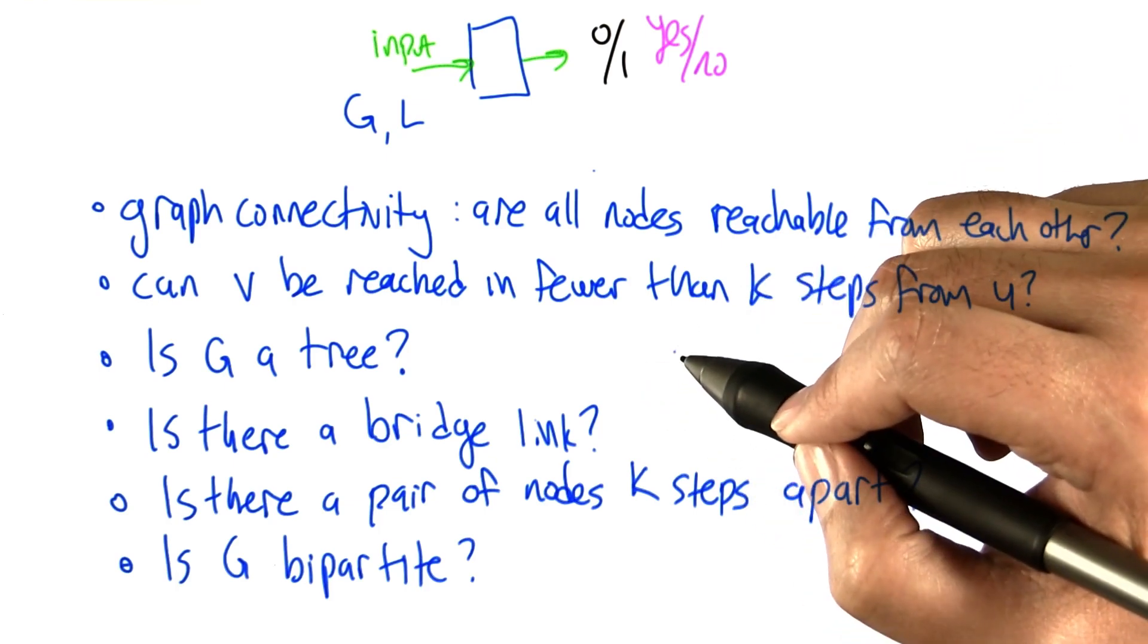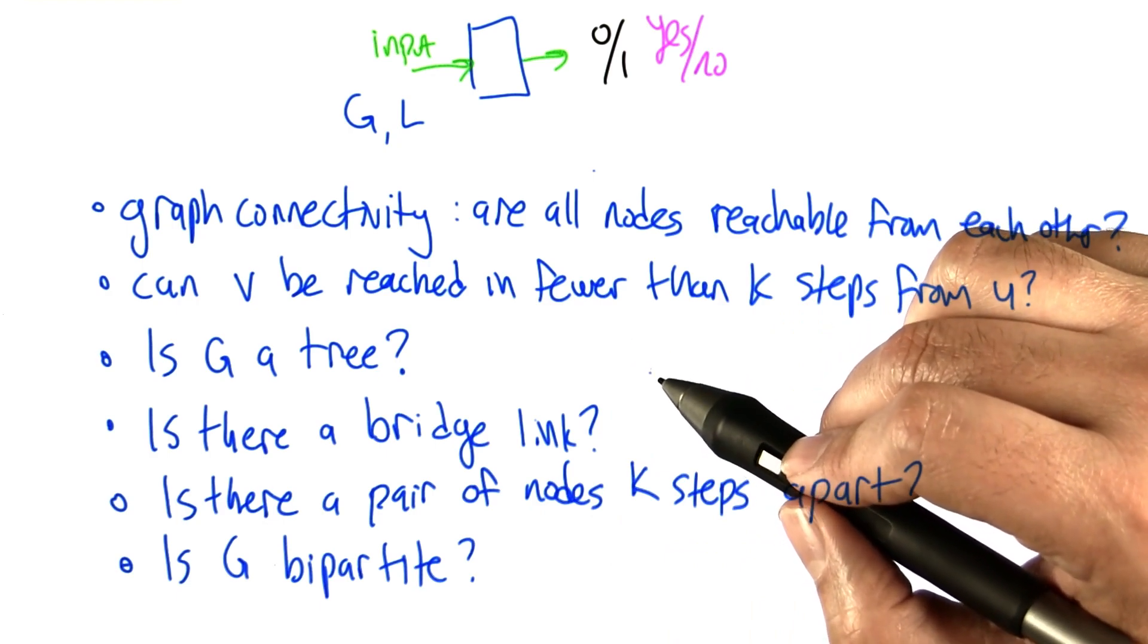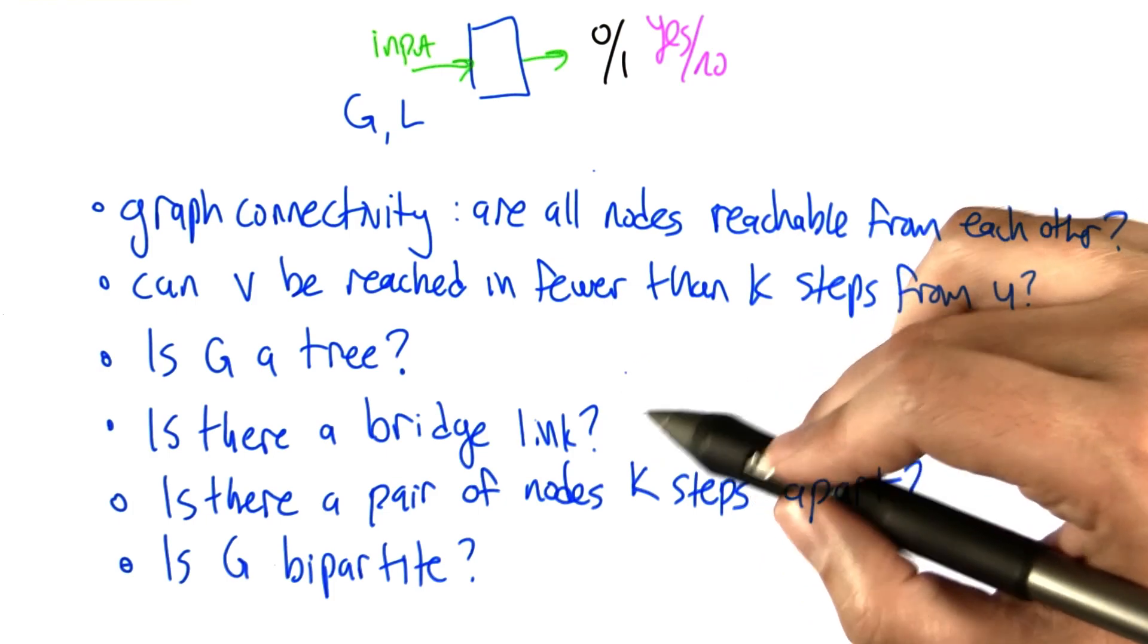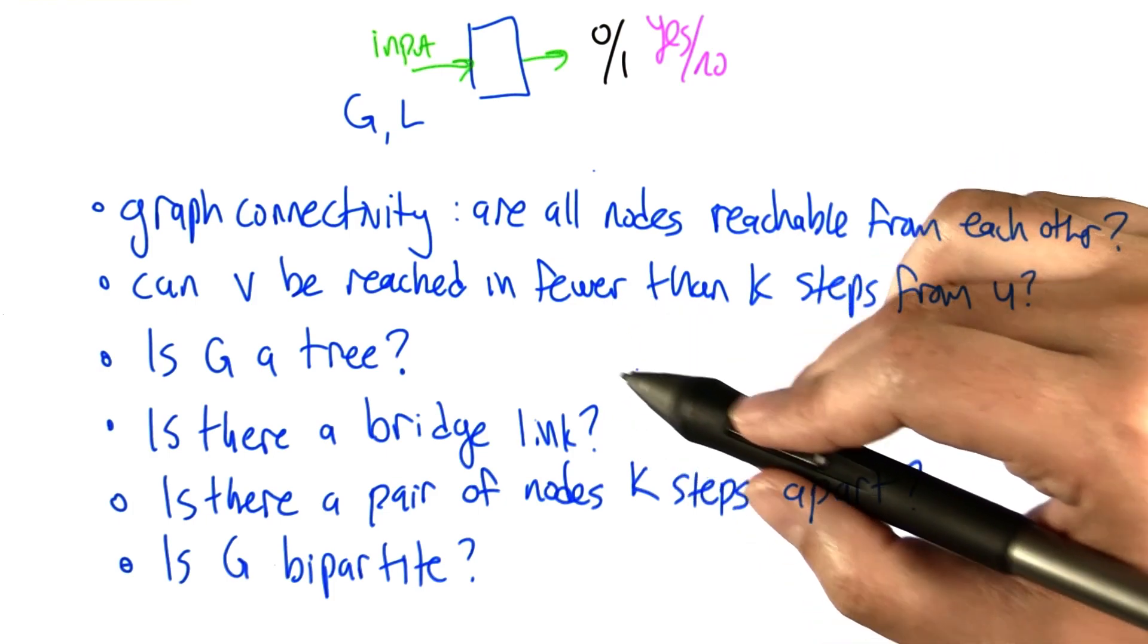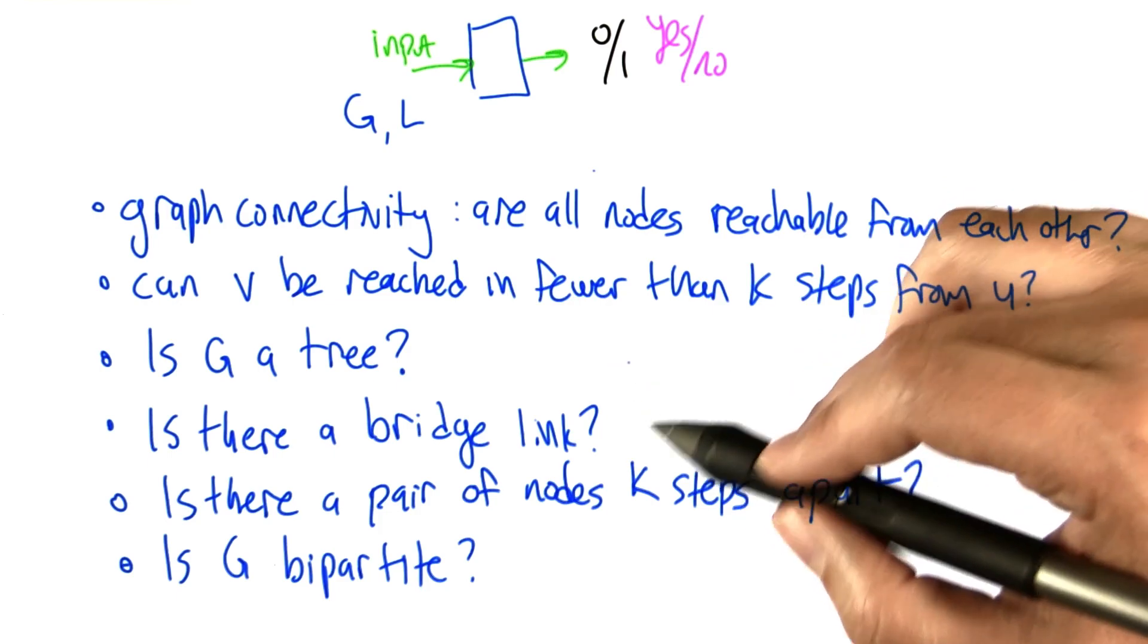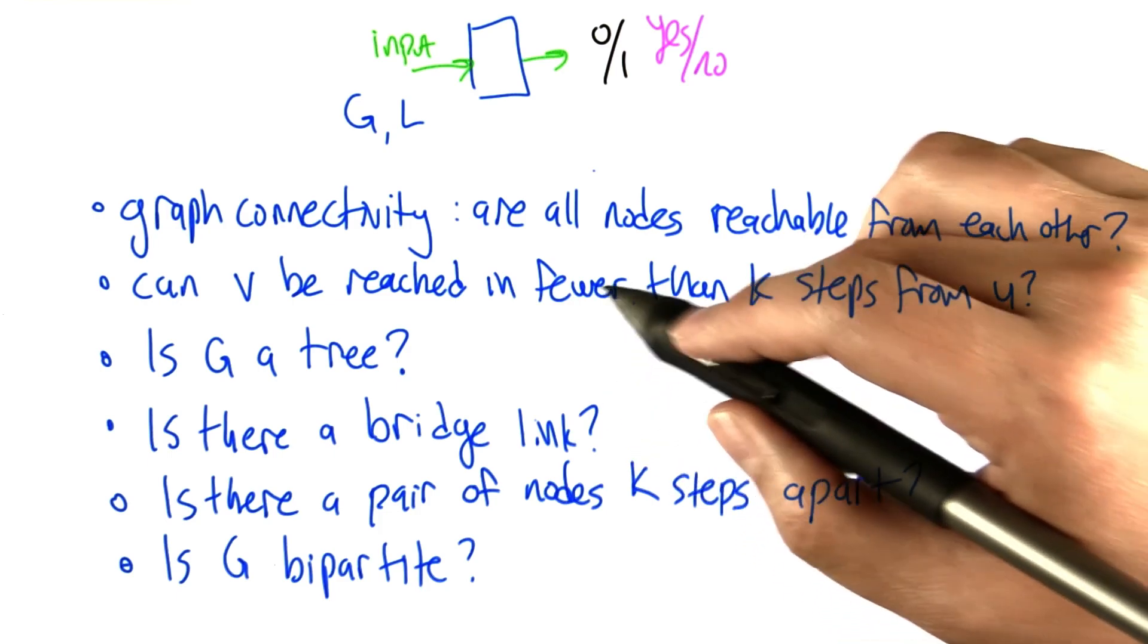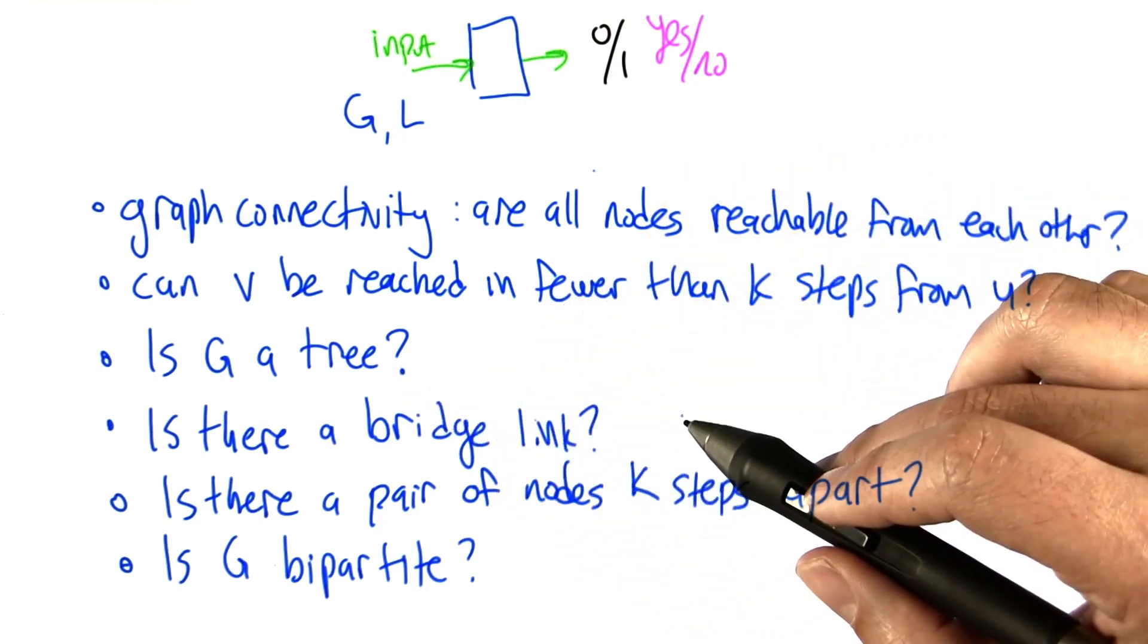An interesting fact about decision problems is they're often directly relatable to the version of the problem that you're interested in that actually gives the answer. Sometimes, you can actually connect them with only a polynomial amount of extra work. Basically, if the decision problem is efficient, so is the problem that returns the more interesting input.